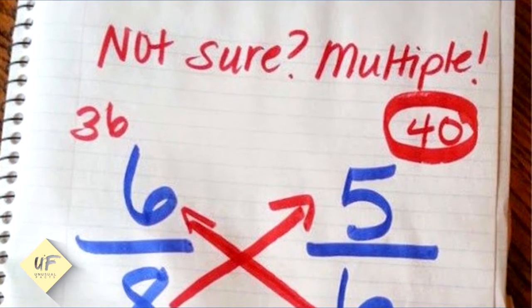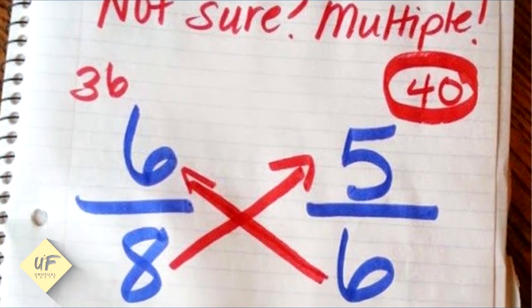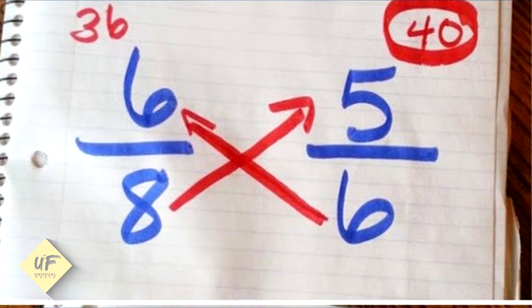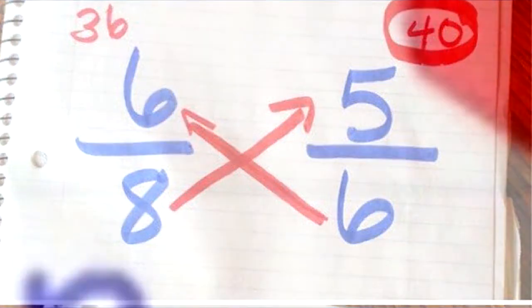6 times 6 is 36, 8 times 5 is 40. And boom, you get it now. 6 eighths is less than 5 sixths.